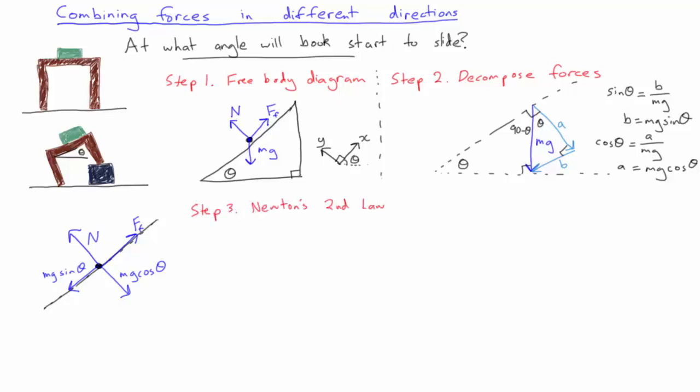We need to do this twice, one for the forces in the x direction and one for the forces in the y direction. In the y direction we have mg cos theta downwards and the normal force upwards. Now because the book isn't falling through the table or flying off the table the sum of the forces in the y direction is zero and we can solve for the normal force.